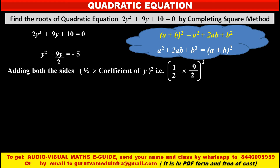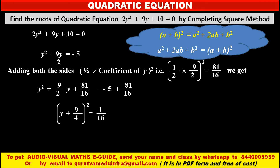Half of 9/2 (the coefficient of y), whole squared, gives us 81/16. We add 81/16 to both sides of the equation. So in the left hand side we get y² + 9y/2 + 81/16, and in the right hand side we get -5 + 81/16. Applying the identity, the left hand side is the expansion of (y + 9/4)², and solving the right hand side gives us 1/16.